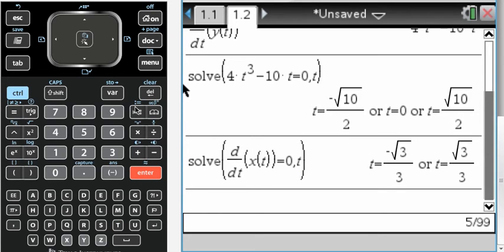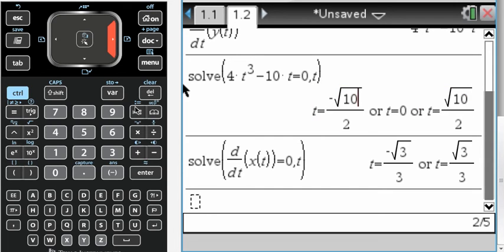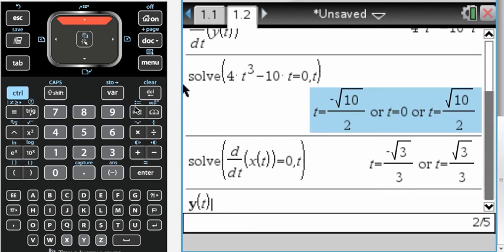Okay, so now I know that when t is negative radical 10 over 2, zero, and radical 10 over 2, there are horizontal tangent lines. If you think about a horizontal tangent line, the equation is just y equals whatever. So all I need to do at this point is evaluate y of t such that, and I can actually go up and copy and paste these.